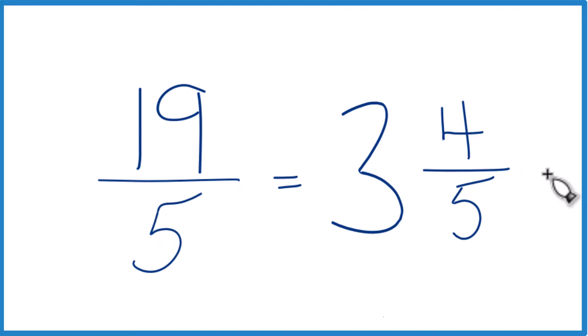And we can check our work because 3 times 5, that's 15. 15 plus 4, that's 19. And we just keep the denominator as 5.